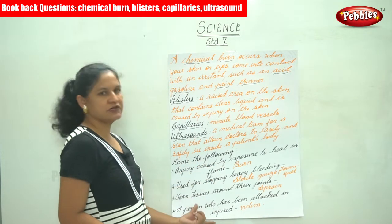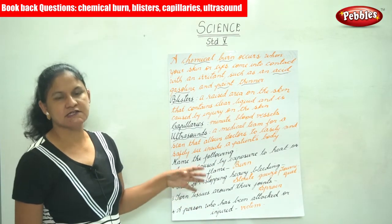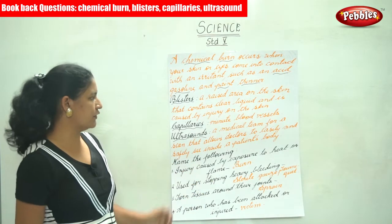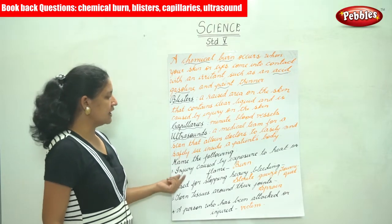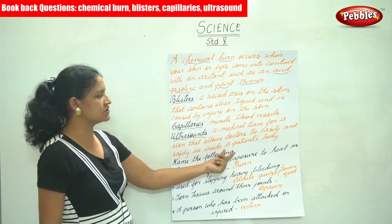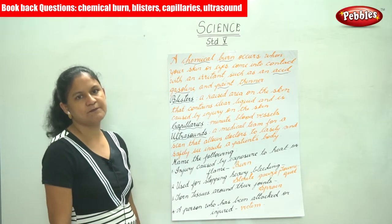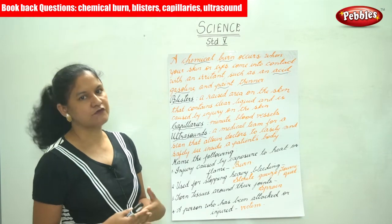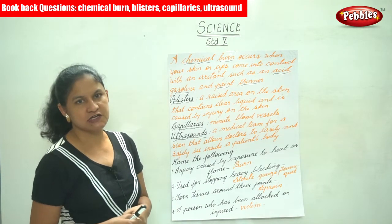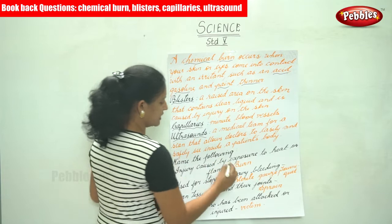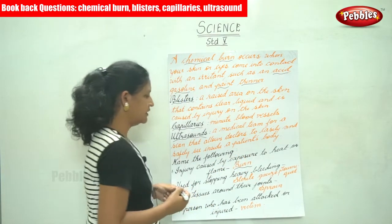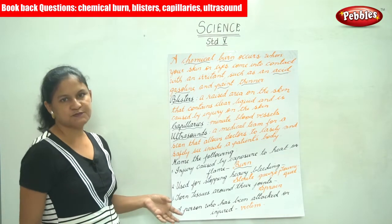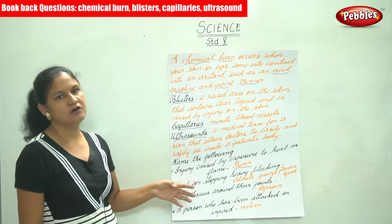Now we will do a small exercise where a term is given and we have to name it. The first is: injury caused by exposure to heat or flame. When our body is exposed to heat or flame and we are injured, it is known as a burn.